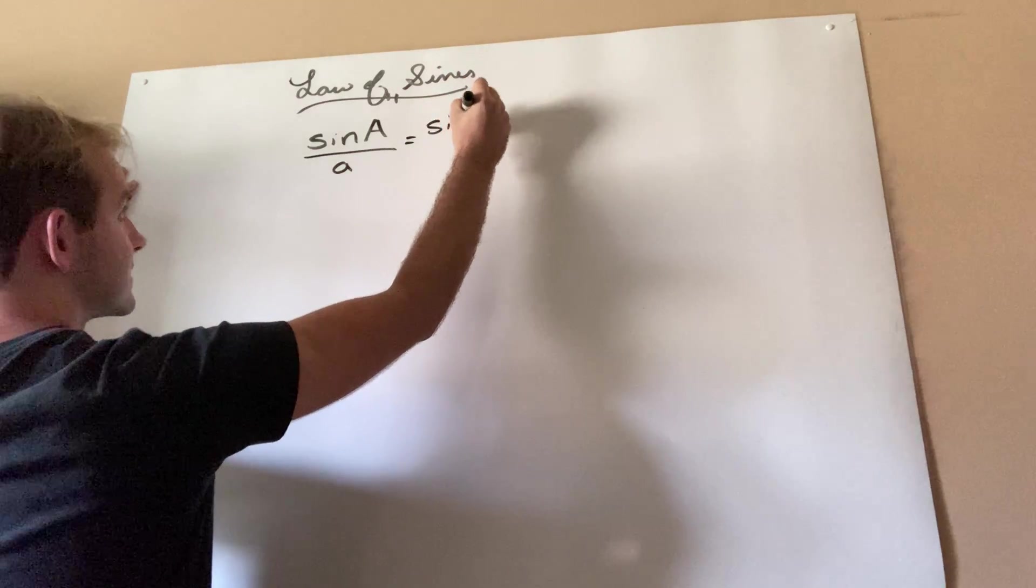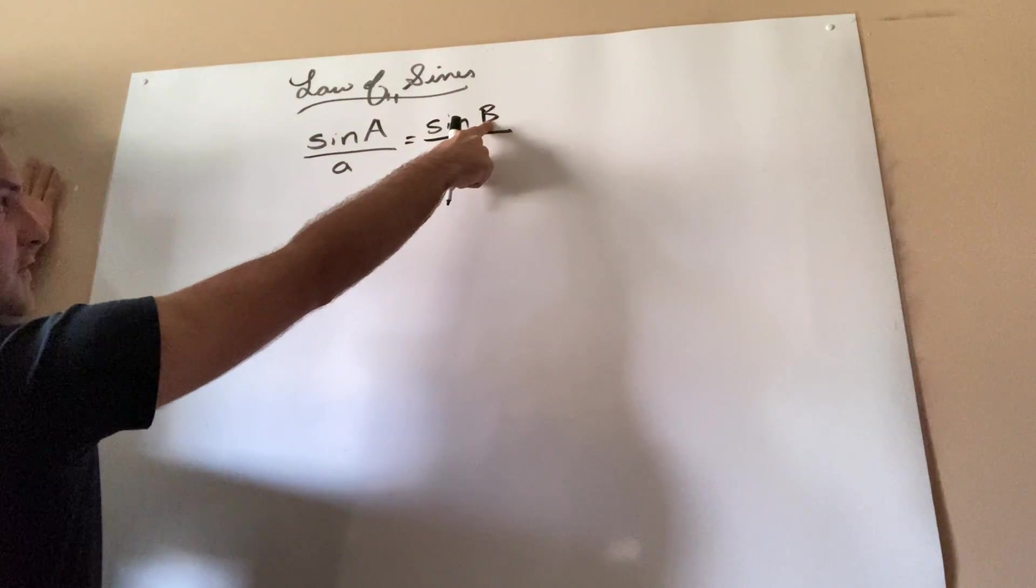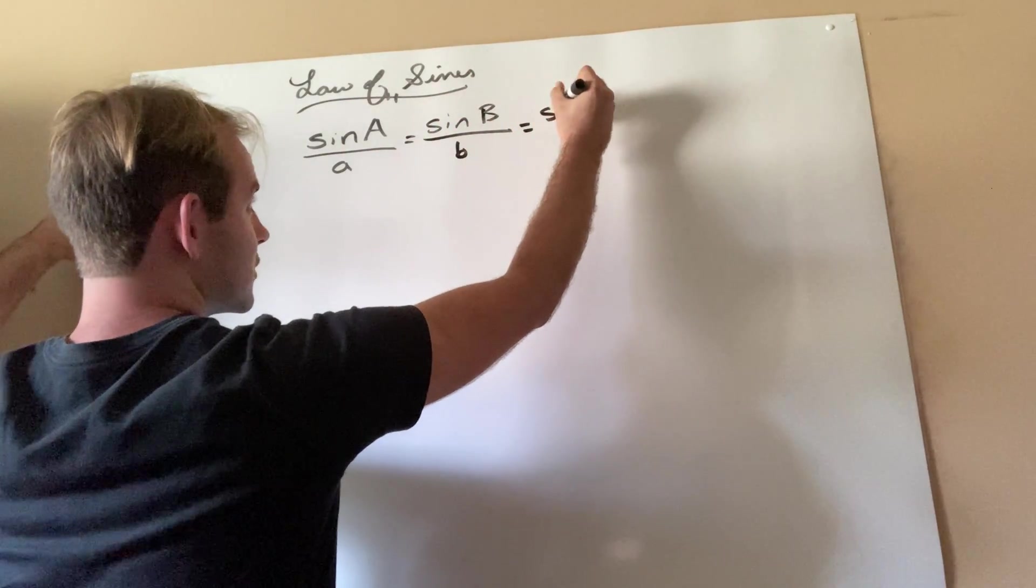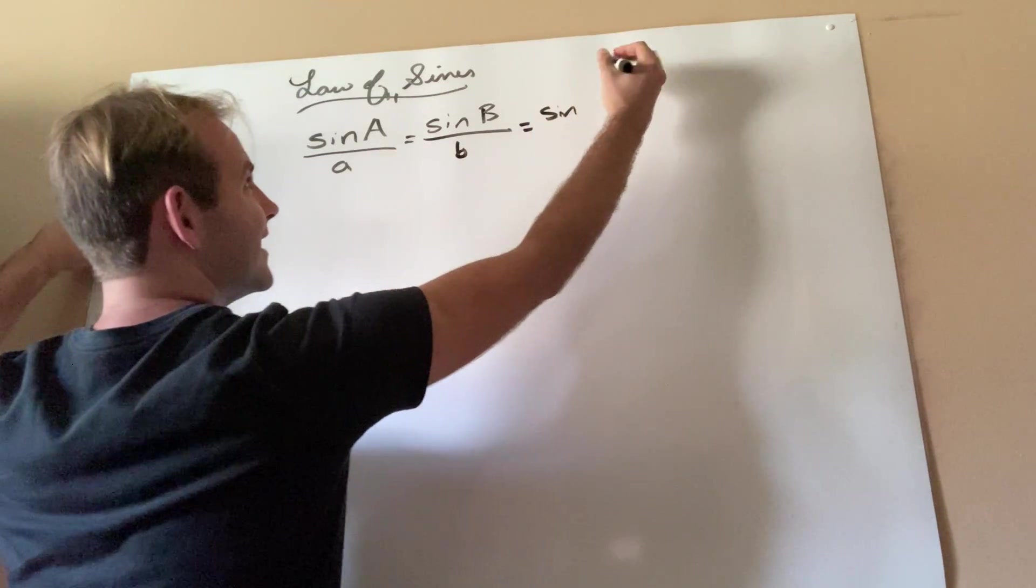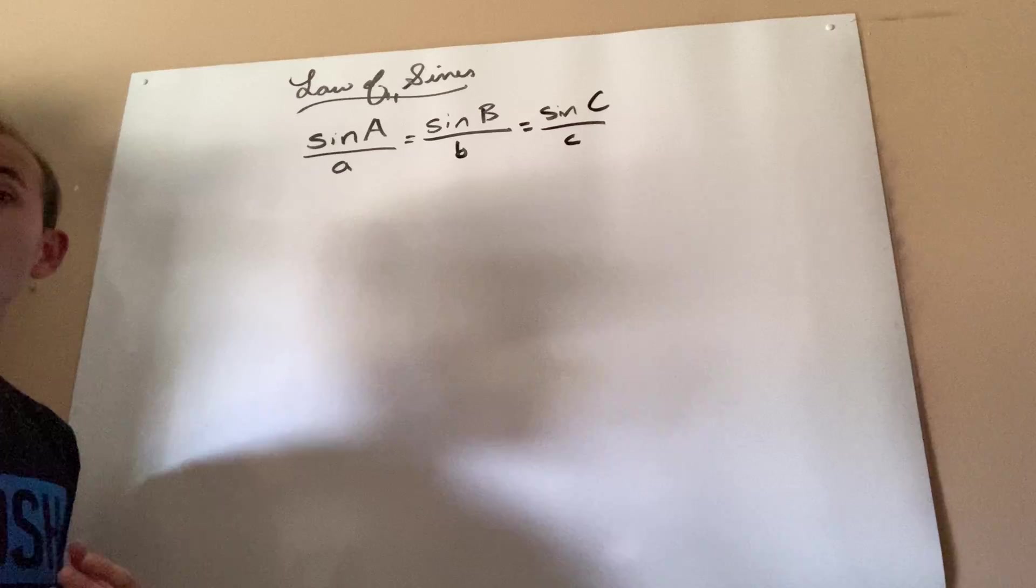is equal to the sine of another angle, in this case I'll just say it's angle b, over the side it's across from, and that's also equal to the sine of the third angle over the side it's across from.